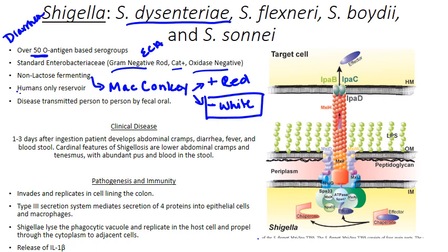We are the only reservoir — the only place that holds it and can transmit it — and it's transmitted via a fecal-oral route between patients. The disease: dysentery-like diarrhea hits about one to three days after the patient ingests the bacteria. The patient will experience abdominal cramps, diarrhea, fever, and bloody stools.